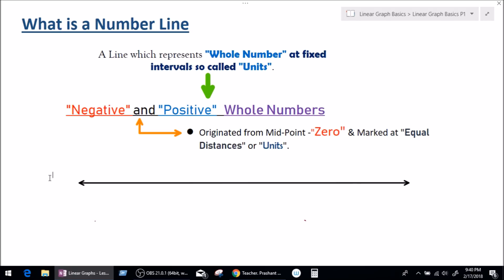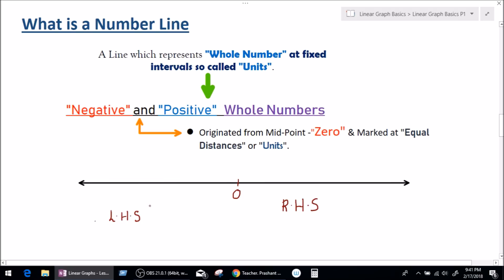How do we place those numbers on the number line? Those numbers are originated from the midpoint 0. So let's assume a midpoint right here and take this midpoint as 0. On the right-hand side we have positive numbers, and on the left-hand side we have negative numbers.